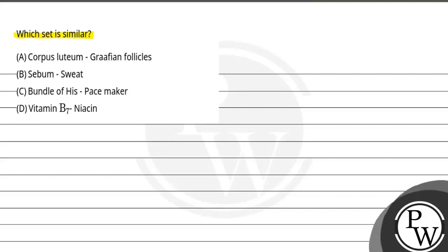First, corpus luteum and graafian follicle. Second, sebum and sweat. Third, bundle of His and pacemaker. Fourth, vitamin B7 and niacin.